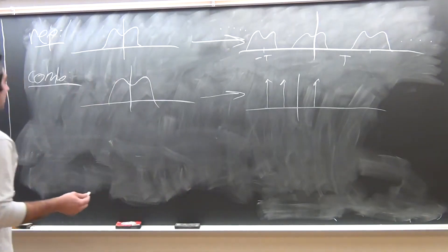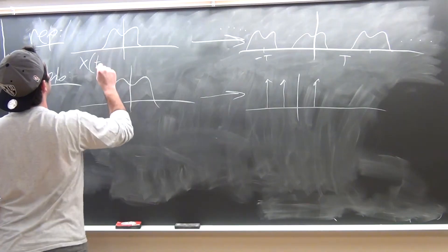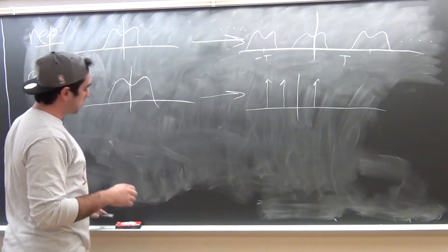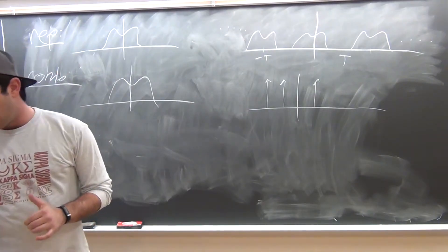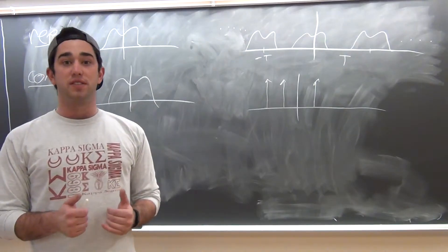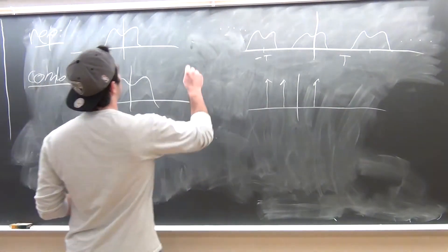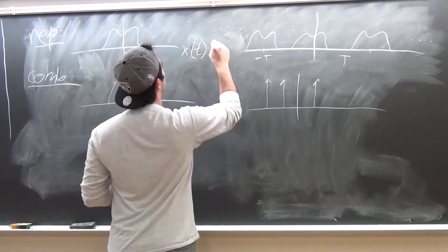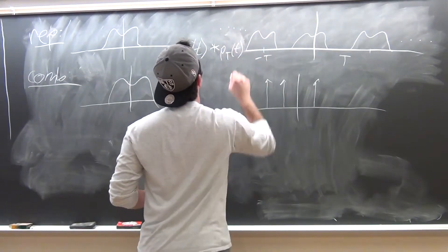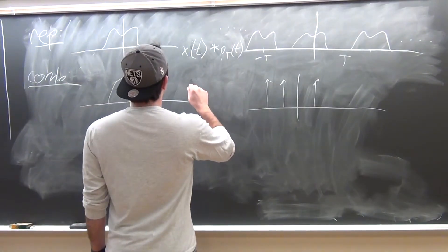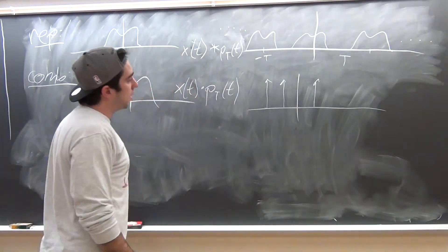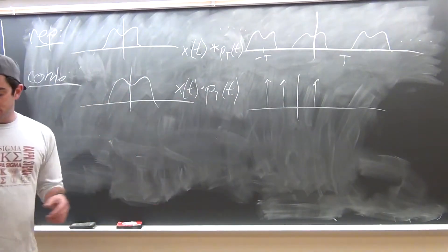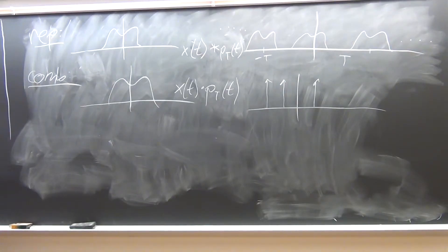Representing these mathematically: a rep is going to be the signal in the time domain convolved with an impulse train, whereas a comb is going to be that same signal in the time domain multiplied by an impulse train. So you've got your signal x(t) convolved with an impulse train, which yields repeating the signal every T length. And for a comb, it's the same signal multiplied by the impulse train, giving you a sampling of it. Those are the starting definitions of rep and comb, and now I'll move into how to find the Fourier transform of each.